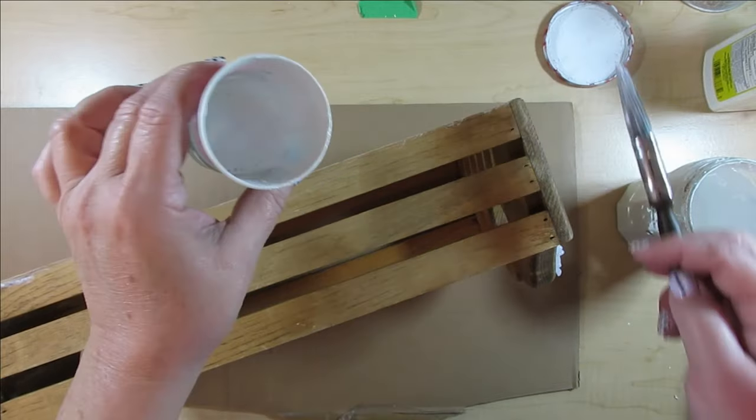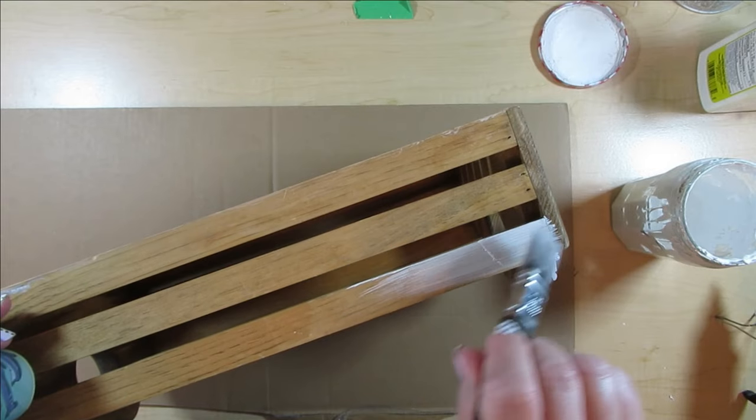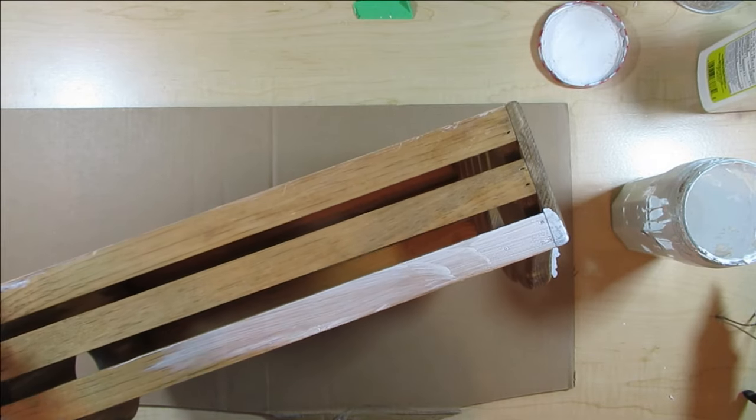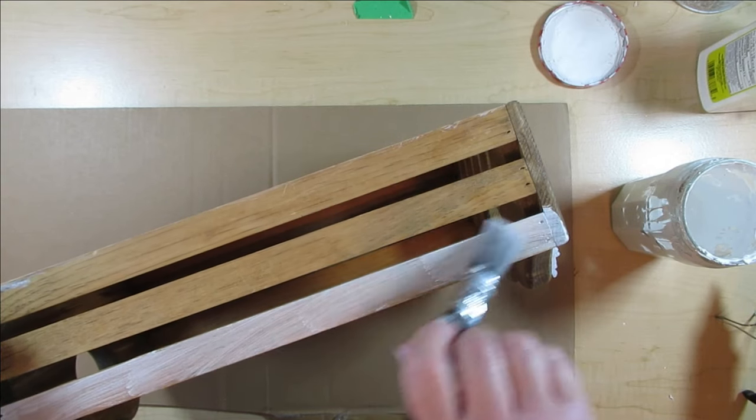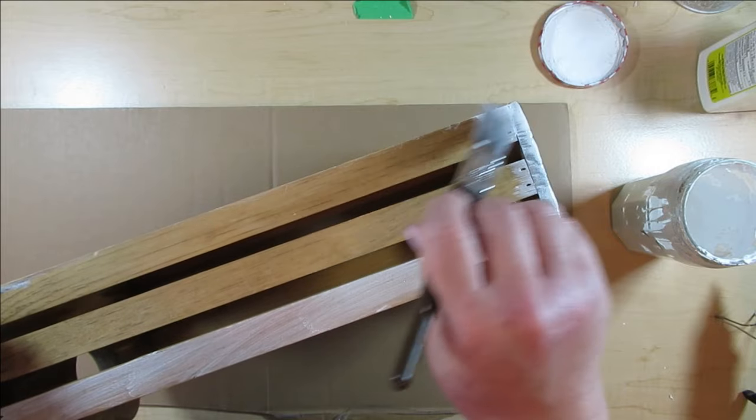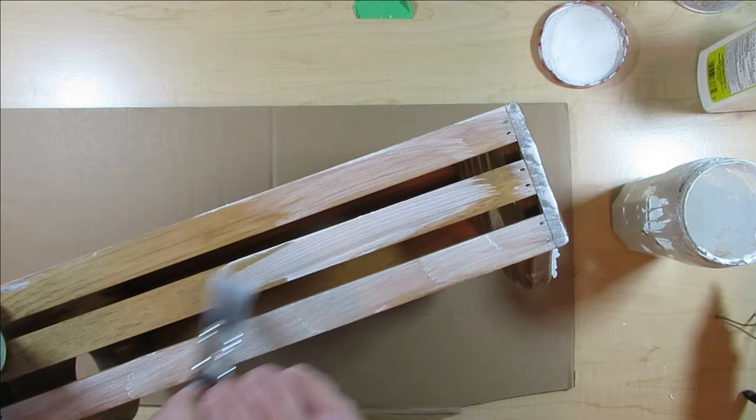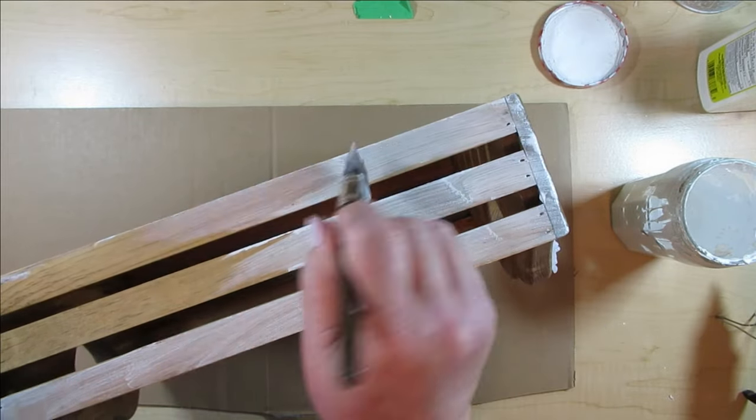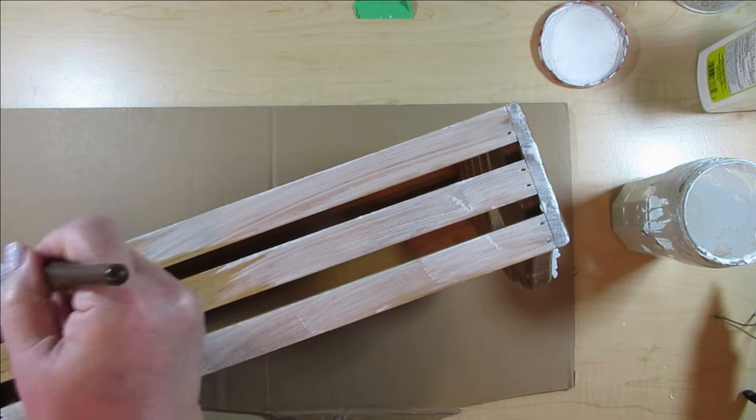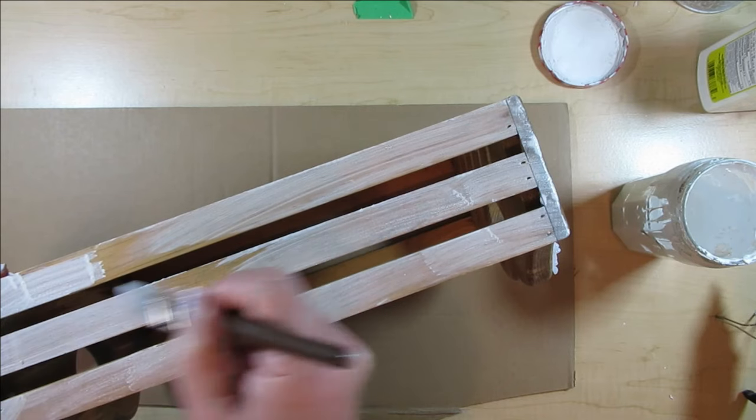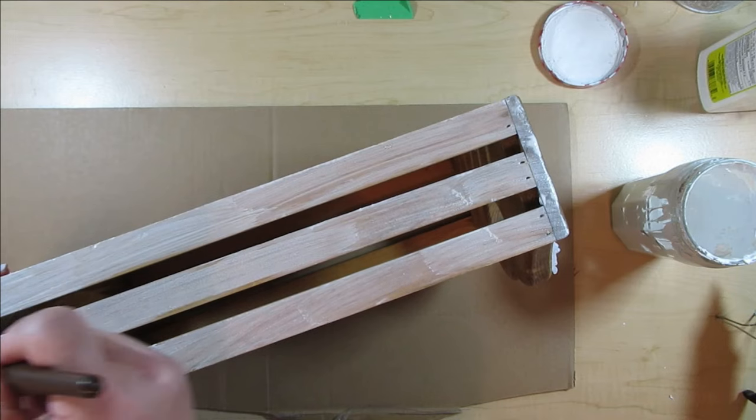Before I added anything to the crate, I did wipe it down and make sure it was completely dry and free of debris. What I'm doing now is taking my white chalk paint in a little cup and diluting it with some water because I want this to be a whitewashed effect. I just want to lighten up the wood a little bit and bring all the colors together.